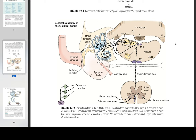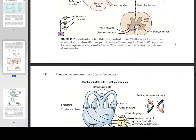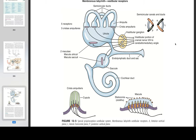The ectodermally derived membranous labyrinth consists of four fluid-filled compartments, all of which communicate (figure 12-3). These compartments are contained within the components of the bony labyrinth and include the saccule and utriculus within the bony vestibule, the three semicircular ducts within the bony semicircular canals, and a cochlear duct within the bony cochlea. The endolymph contained within the membranous labyrinth is thought to be derived from blood vessels along one wall of the cochlear duct and is absorbed back into blood through blood vessels surrounding the endolymphatic sac. The three semicircular ducts are the anterior (vertical), posterior (vertical), and lateral (horizontal), each oriented at right angles to the others. Each semicircular duct connects at both ends with the utriculus, which connects with the saccule by way of the endolymphatic duct and sac. The saccule connects with the cochlear duct by the small ductus reuniens.